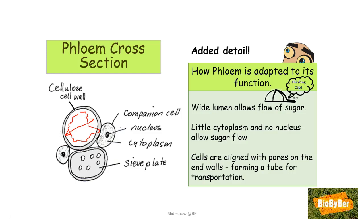For added detail — especially for those able for a bit more — how phloem is adapted to its function is not strictly on the biology syllabus, but you should be able to apply it to an interpretive or thinking-cap question. Phloem has a wide lumen which allows the flow of sugar. Having no nucleus, no mitochondria, and little cytoplasm allows a free passage for sugar to travel. The pores in the sieve plates are aligned, forming a continuous tube for transportation.